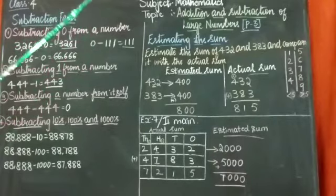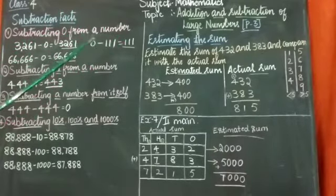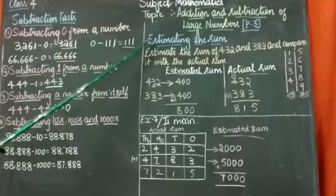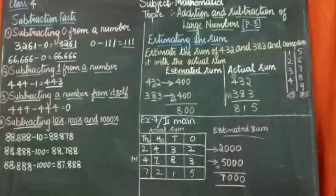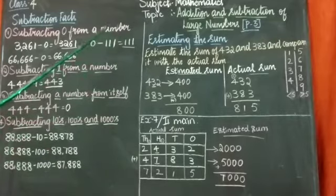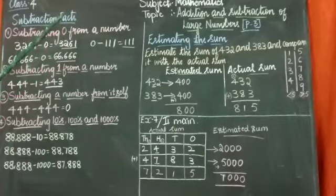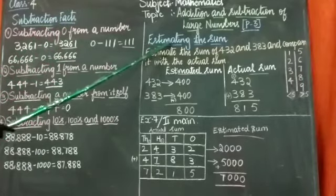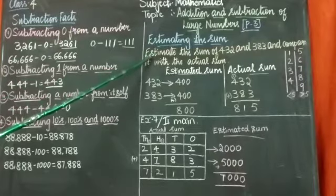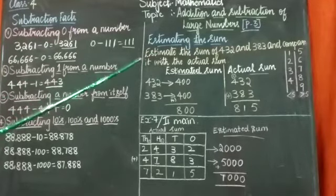Next, we will move on to estimating the sum. First of all, what do you mean by estimation? You have learned in last chapter round off. Round off to tens place, hundreds place, thousands place, etc. Estimation is nothing but the approximate value taken by observation.